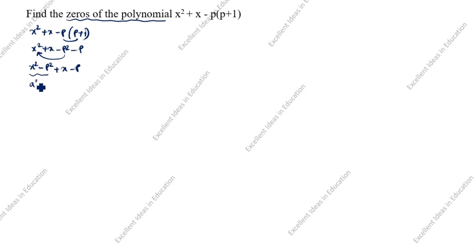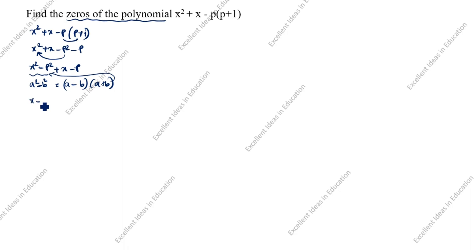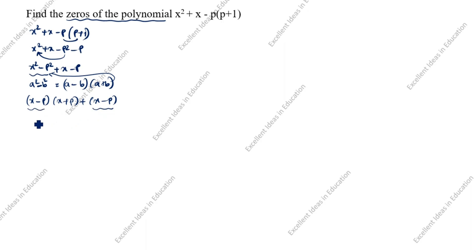What is this? We have a² - b². The formula for a² - b² is (a - b)(a + b). So we will split x² - p² as (x - p)(x + p). Applying this: (x - p)(x + p) + (x - p). Here x - p appears in both terms, so we take it outside.